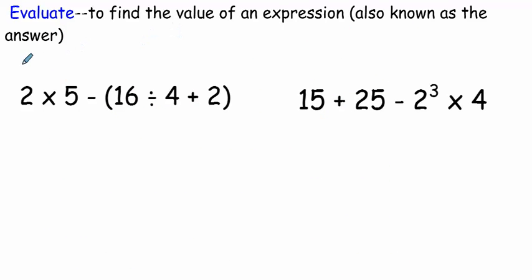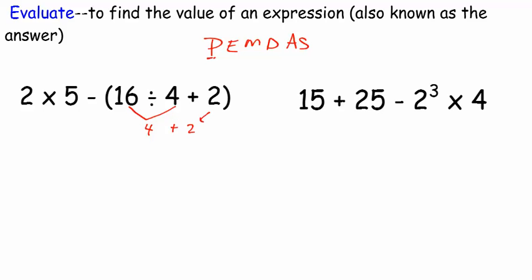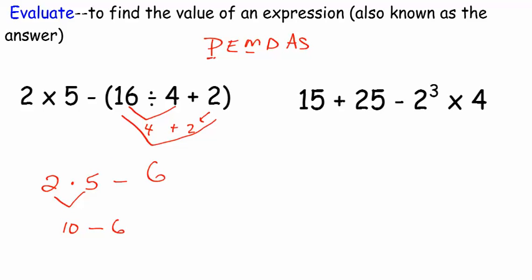Let's go ahead and practice. I'm going to write it at the top: 'Please Excuse My Dear Aunt Sally' to help remember. Any parentheses? Yes. So I have to do all of this first. If there is more than one sign inside the parentheses, I still have to follow order of operations — I've got division and addition, so I should do division first. Six divided by four would be four, plus the two that's already there, so this whole thing would equal six. Then the rest of the problem: two times five minus six. I've got multiplication and subtraction, so multiplication next — that would be 10 minus six, which gives me four.